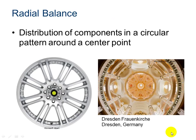Radial balance is the distribution of components in a circular pattern around a center point. You can see that here in this example of the wheel of a car — it's a circular pattern all centered around a central point. In this dome at the Dresden Frauenkirche in Germany, we can see a center point here, and then radial symmetry all around, with different patterns around this center focal point, and we can see it here in the use of the balconies as well.